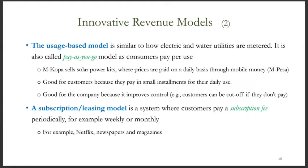The usage-based model is similar to the way electric and water utilities charge prices based on usage. It is also called the pay-as-you-go model, as consumers pay per use. For example, the Kenyan firm M-Kopa sells solar power kits to consumers following the usage-based model — every day, consumers pay the day's cost of using the solar kit, which is about 50 US cents. The money is transferred using the mobile money system M-Pesa. This revenue model is highly attractive for African consumers who have low purchasing power.